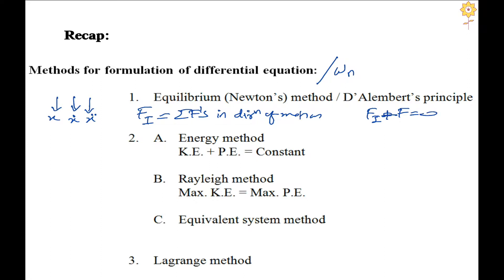Next are the energy methods. We have the summation of KE and PE, which is total energy for a conservative system and remains constant for any given time t, so the time derivative is equal to zero. From this we get the differential equation: m*x-double-dot plus k*x equals zero. Dividing throughout by m gives x-double-dot plus (k/m)*x equals zero, from which we get the value of omega_n squared.